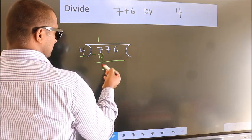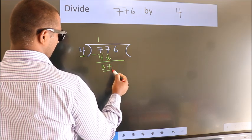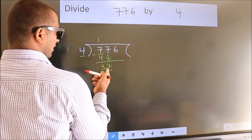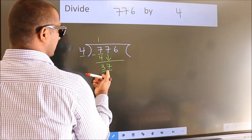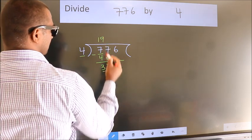After this, bring down the beside number. So 7 down, giving us 37. A number close to 37 in the 4 table is 4 nines 36.